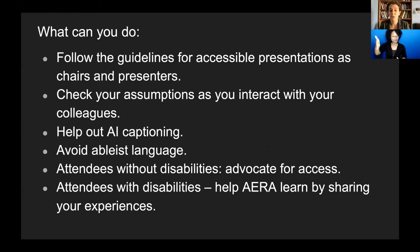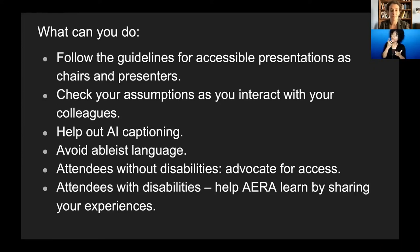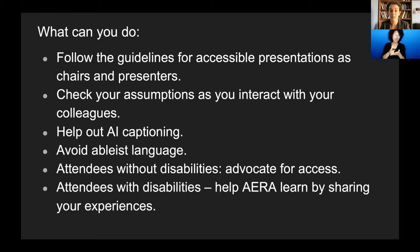What you can do: please follow the guidelines for accessible presentations. Check your assumptions as you interact with colleagues — don't assume that video chat is going to be the best way for folks to interact, because if somebody is deaf or hard of hearing they may prefer text chat. You don't know if somebody has video off because they're lying in bed — that's the way they can participate. Push yourself to not make assumptions about what anybody is experiencing. Help out AI captioning — if you see it repeatedly getting a keyword wrong, use the public chat to write a correction. That's a great way to participate in the access process.